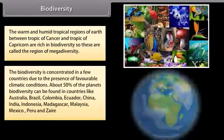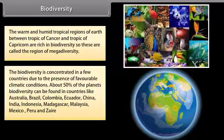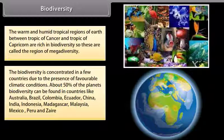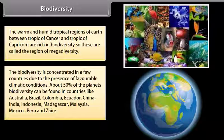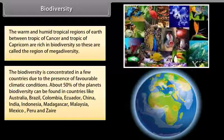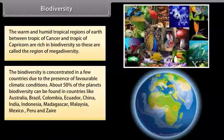The biodiversity is concentrated in a few countries due to the presence of favorable climatic conditions. About 50 percent of the planet's biodiversity can be found in countries like Australia, Brazil, Colombia, Ecuador, China, India, Indonesia, Madagascar, Malaysia, Mexico, Peru, and Zaire.